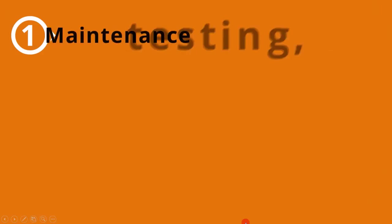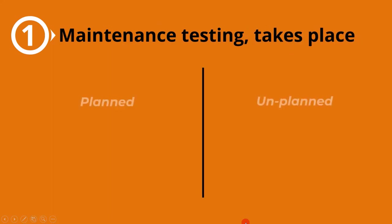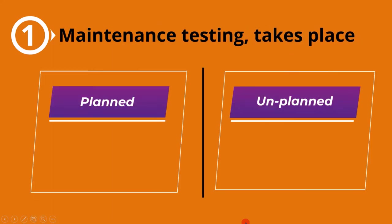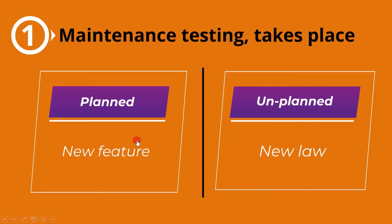The first point is maintenance testing is done for both planned and unplanned changes. In the last lecture, we saw some of the reasons for software change like defect fix, changed or new requirement, and environment change. Planned changes are due to defect fix, feature enhancements, etc., and unplanned changes are due to an external impact on the application, for example, when the law of the land changed.